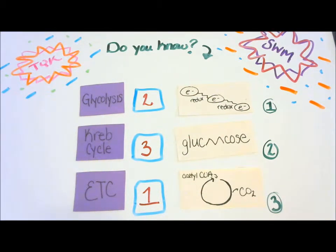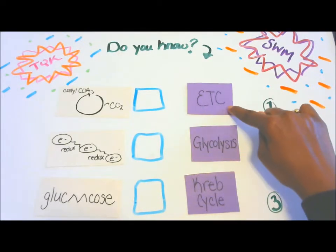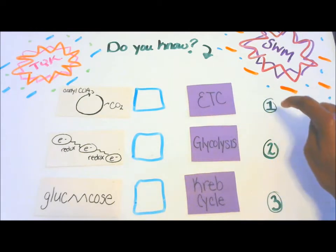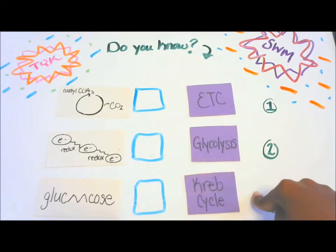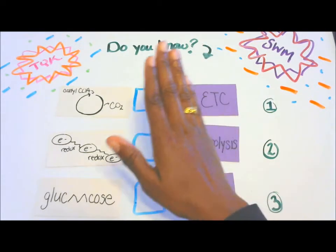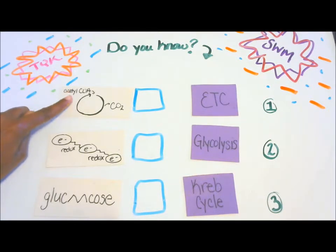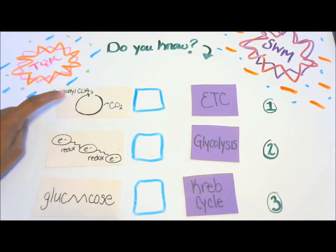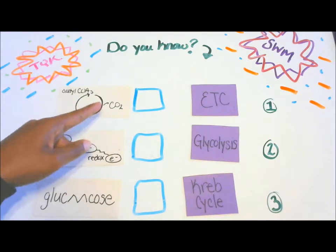We're going to do this again — I mixed things up a little bit. Number one is electron transport chain, number two is glycolysis, and number three is the Krebs cycle. Match these up with the picture definitions. The first picture definition: the oxidation of acetyl-CoA going into the cycle, resulting in carbon dioxide.